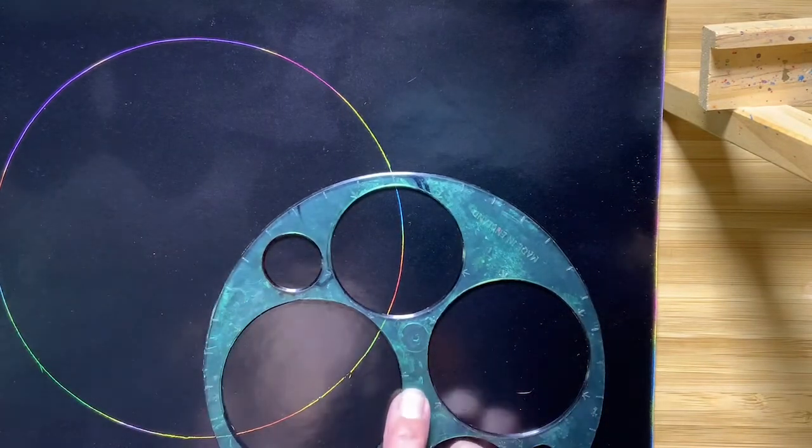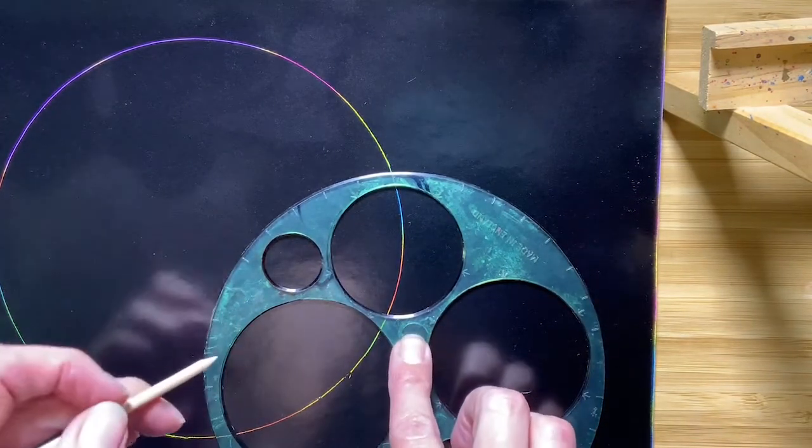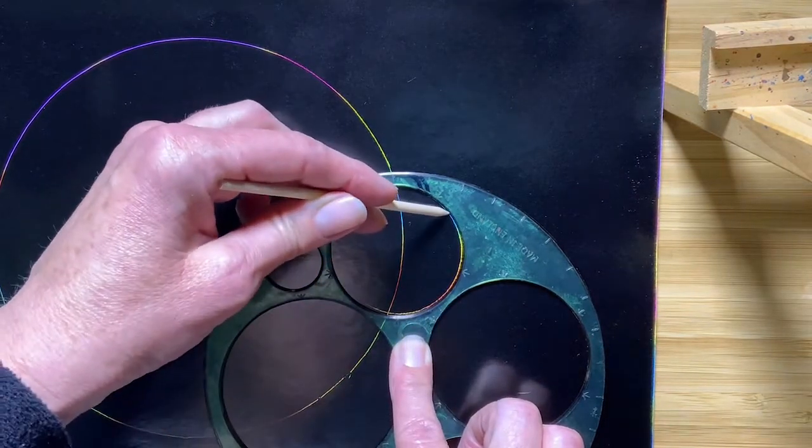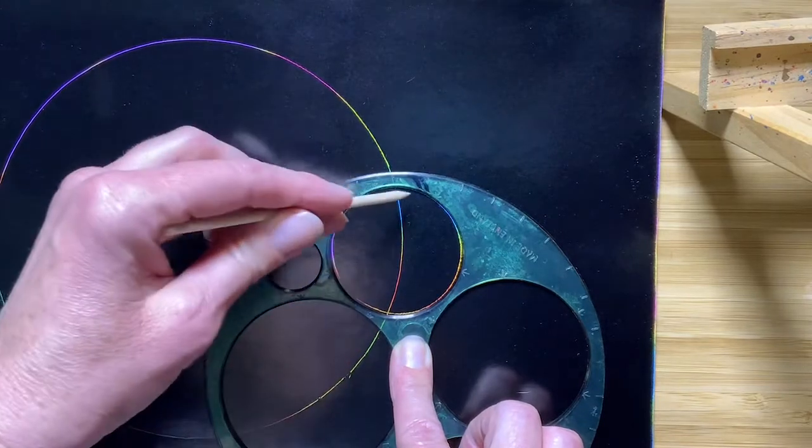So I'm going to set this down again. I'm going to keep my fingers on the plastic stencil so I'm not touching the paper. I'm going to kind of pull around the design.